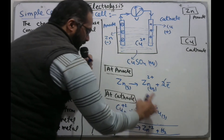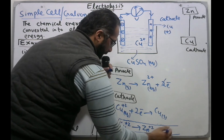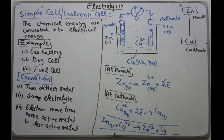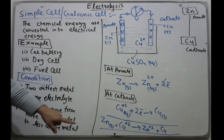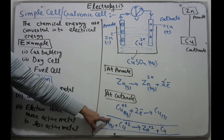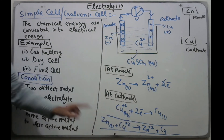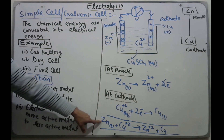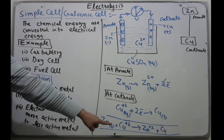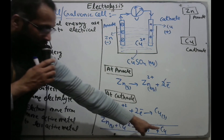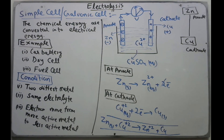The overall reaction is: Zn(s) + Cu²⁺(aq) → Zn²⁺(aq) + Cu(s). In this reaction, zinc has an oxidation state of zero in the reactants and becomes +2 on the right side, so oxidation takes place at zinc. Reduction takes place at copper because the oxidation number of copper decreases from +2 to zero. These are examples of galvanic cells, also named simple cells.